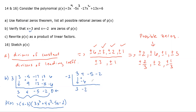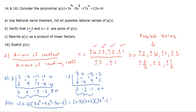Bring down 3; (−2)(3) = −6; 4 + (−6) = −2; (−2)(−2) = 4; −5 + 4 = −1; (−2)(−1) = 2; −2 + 2 = 0. So x = −2 is confirmed as a zero, and we can now rewrite as (x − 3)(x + 2)(3x² − 2x − 1).